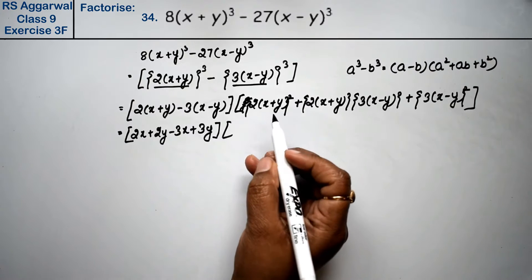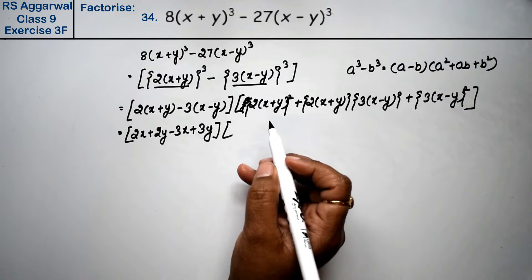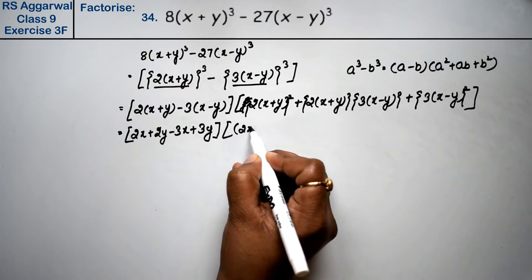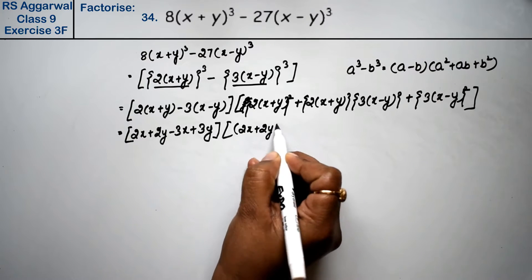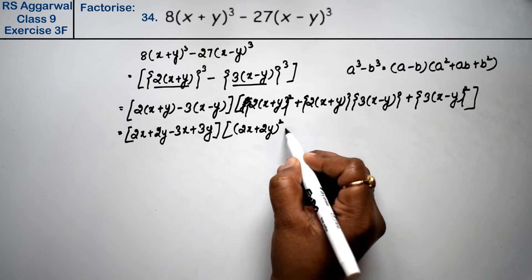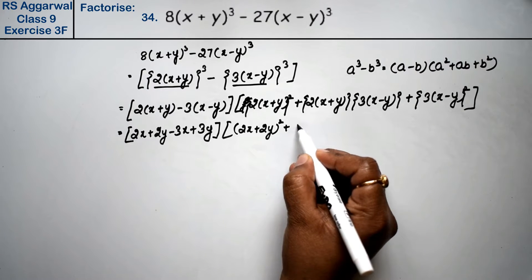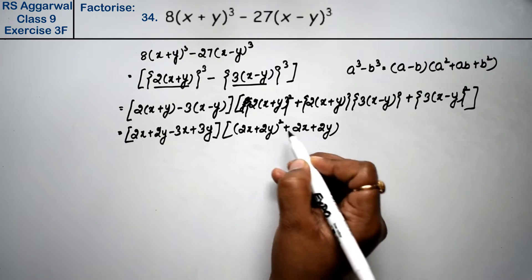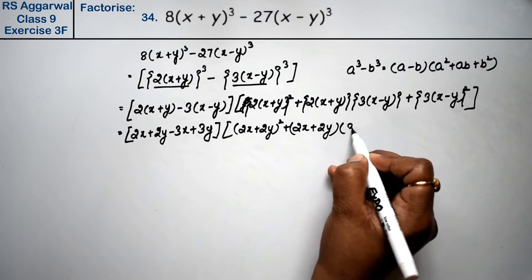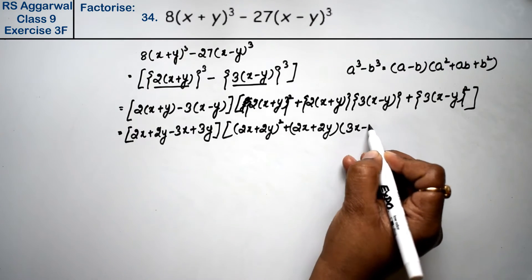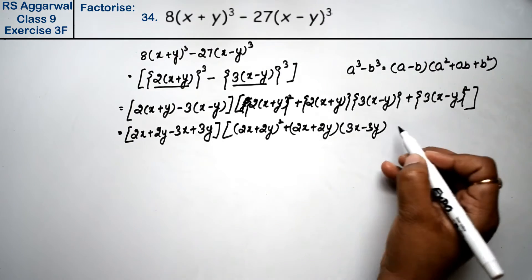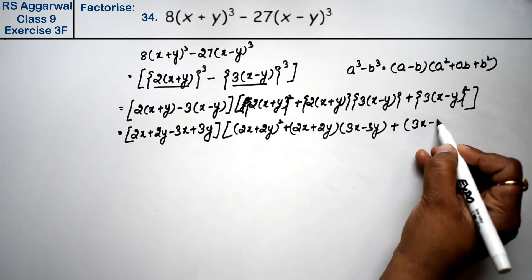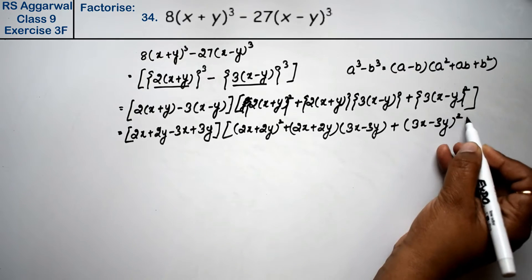So we can write: [2(x+y)]² whole square, plus 2(x+y) into 3(x-y), plus [3(x-y)]² whole square. We can expand this as (2x+2y)² plus (2x+2y)(3x-3y) plus (3x-3y)².